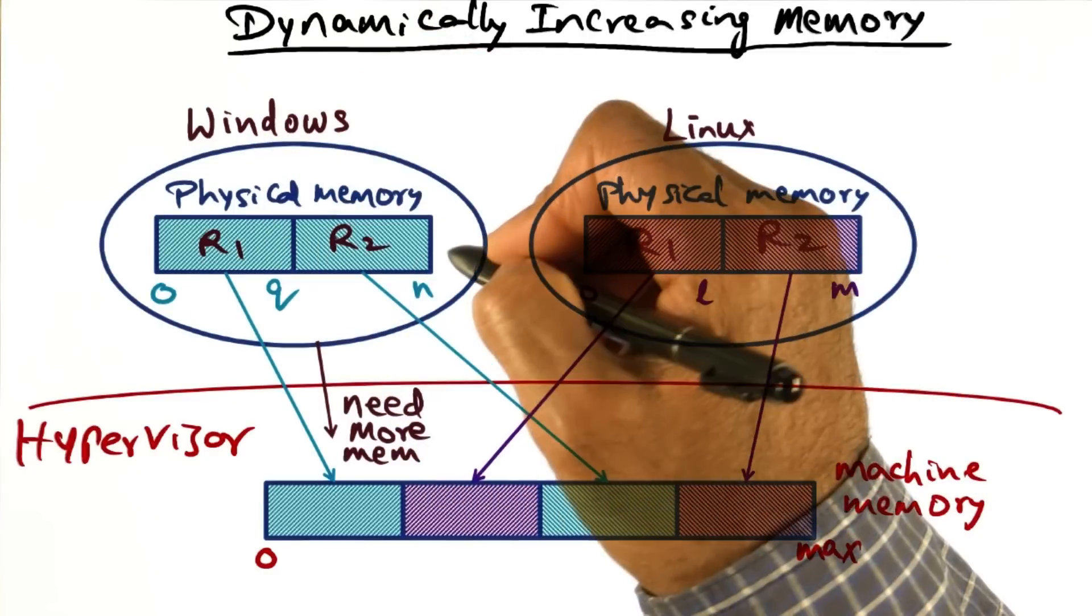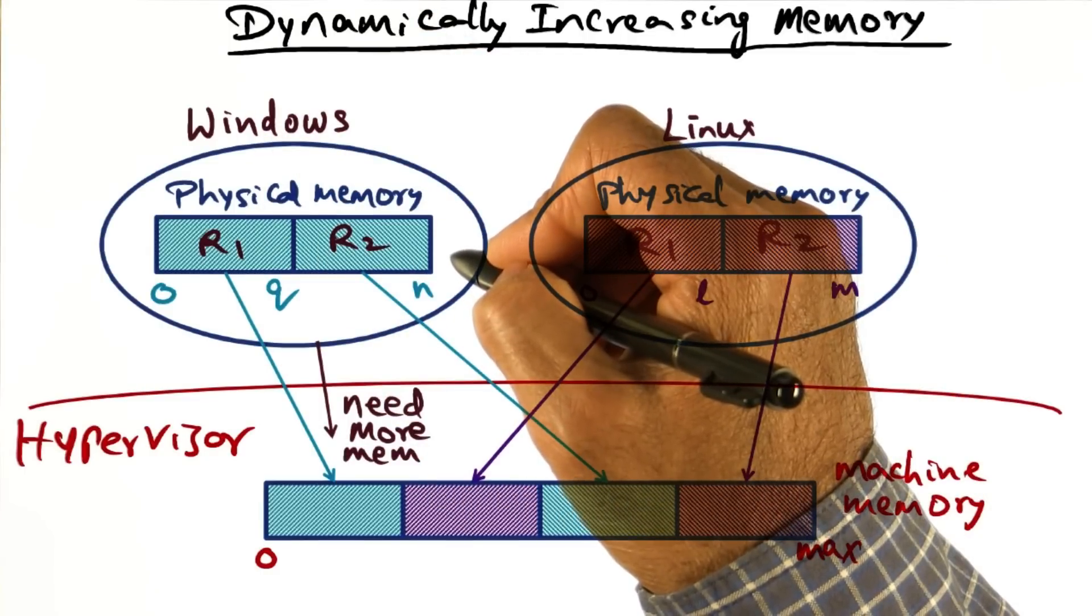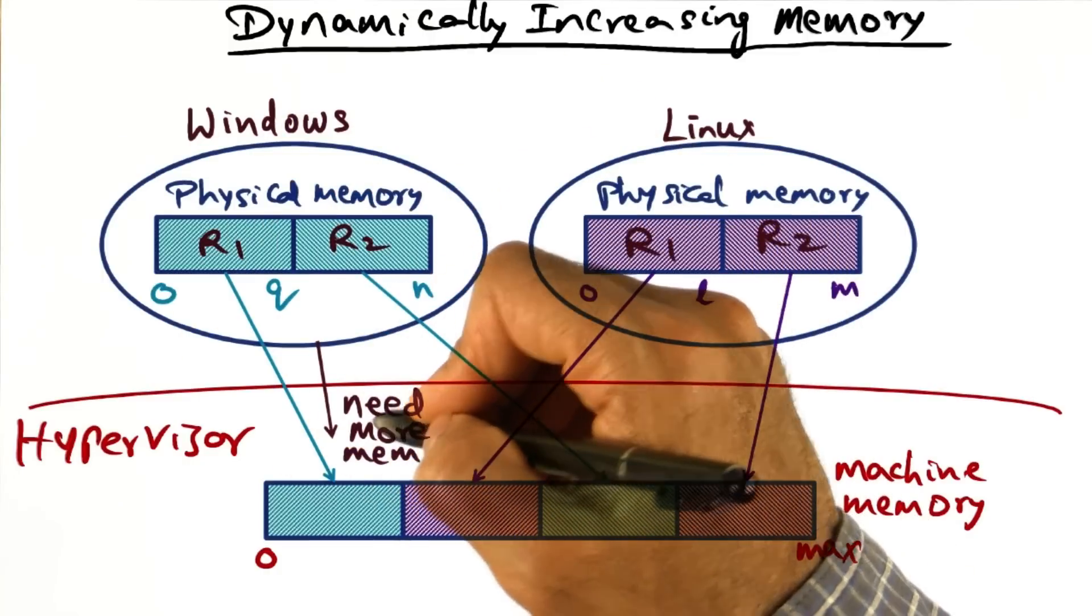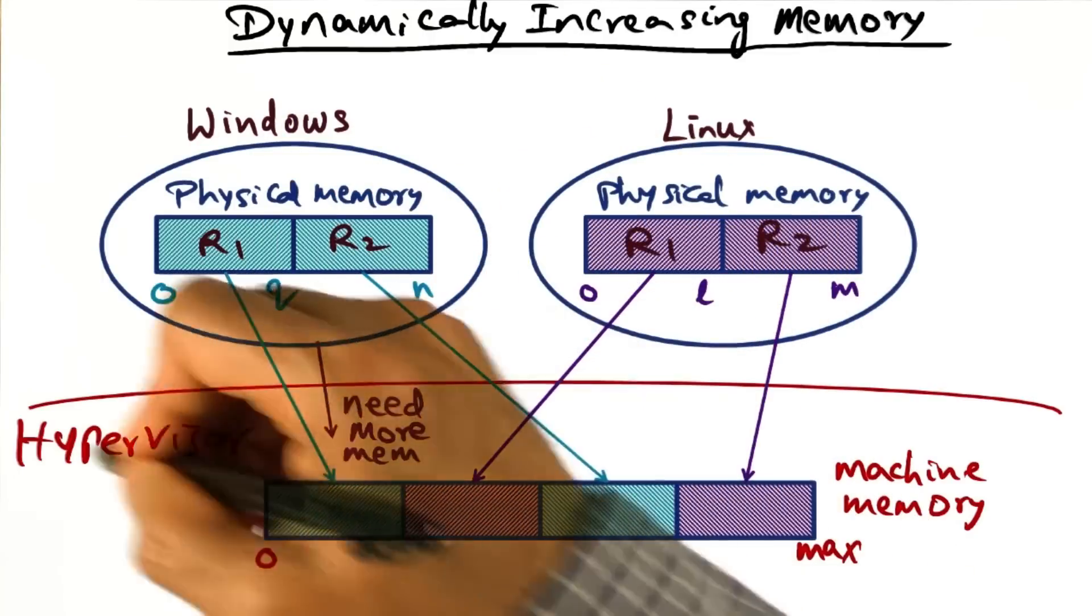What if the Windows operating system experiences a burst in memory usage? And therefore, it's requiring more memory from the hypervisor.